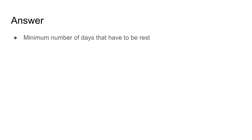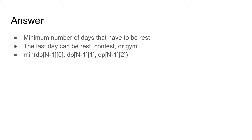Now let's consider the answer to the problem. We are outputting the minimum number of days that have to be rest. The last day can be rest, contest, or gym. So the answer is the minimum of dp[n-1][0], dp[n-1][1], and dp[n-1][2]. We use n-1 instead of n because we are using zero-based indexing; if you use one-based indexing, you would use n instead.